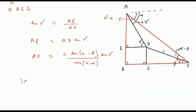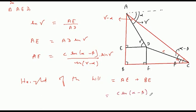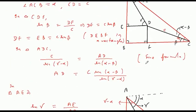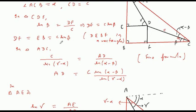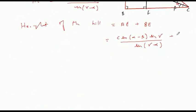हमें तो height चाहिए — height of the hill निकालना है। तो वह AE + BE होगा। AE यह रहा: c·sin(alpha minus beta)·sin(gamma)/sin(gamma minus alpha)। और BE = EB = c·sin(beta)। तो height = c·sin(alpha minus beta)·sin(gamma)/sin(gamma minus alpha) + c·sin(beta)।